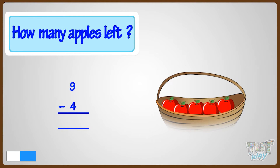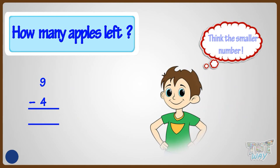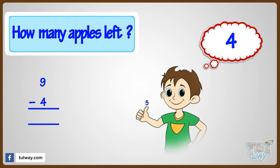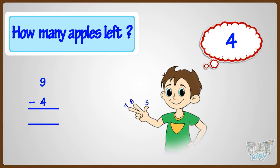So we have to subtract four from nine. Think the smaller number — that is four. And now count up to nine on your fingers: five, six, seven, eight, nine.